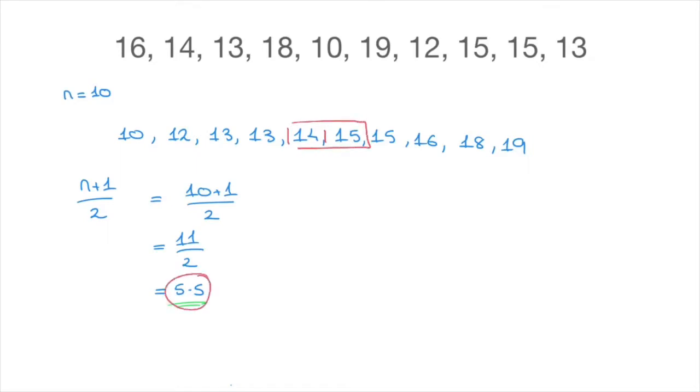And in fact, what this five point five is telling us is that the median value is the average of the fifth and the sixth values. In other words, the median value is the average of fourteen and fifteen. So we write median is equal to fourteen plus fifteen over two. That's equal to twenty-nine over two. And finally, we can state that the median value is equal to fourteen point five. And so that's how we can locate and calculate the median value when we have an even number of values in our list of data.